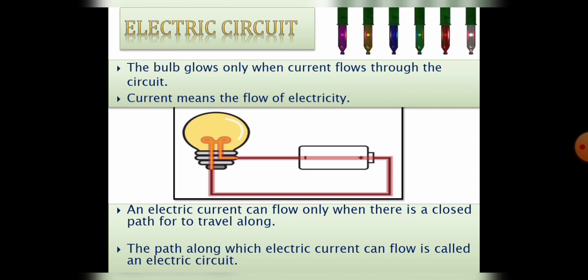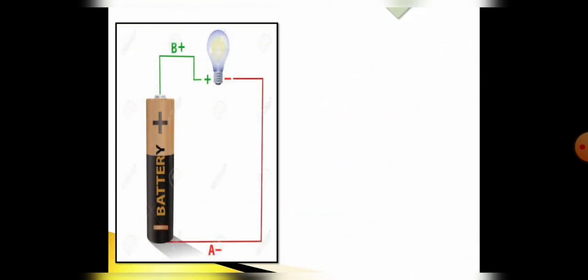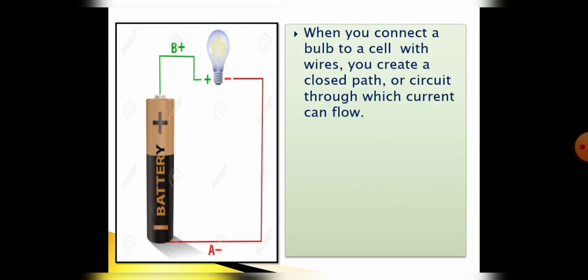That means current can only flow when there is closed path, and yeh path jis mein electric current flow karata hai electric circuit kahlata hai. Now look at this picture. When you connect a bulb to a cell with a wire, you create a closed path or circuit through which current can flow.